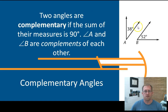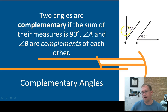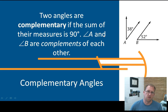Complementary angles are two angles whose sum is 90 degrees. Angle A and B are complements of each other — for example, 38 degrees and 52 degrees. When you add them together, you get 90 degrees. So those are complementary angles: they add up to 90.